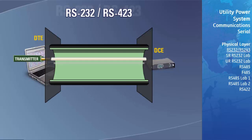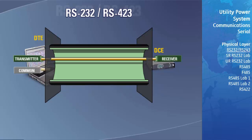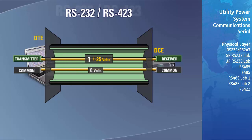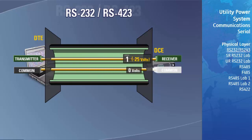The transmitter of one device is connected to the receiver of the other while the signal commons are connected directly together. The transmitter produces a voltage on its transmit pin with respect to its local signal common. The receiver detects and compares that voltage with its local signal common.